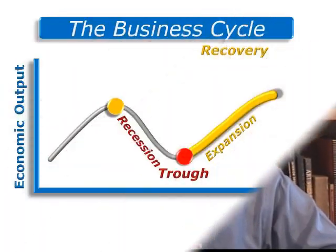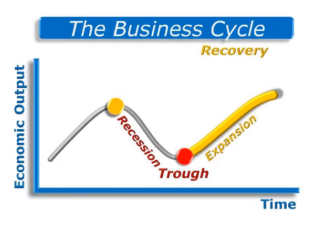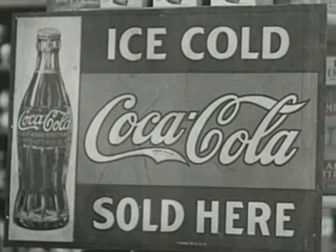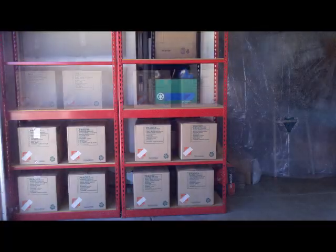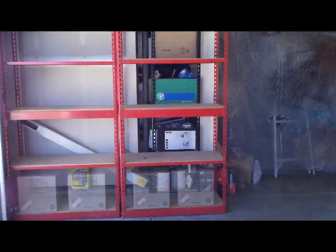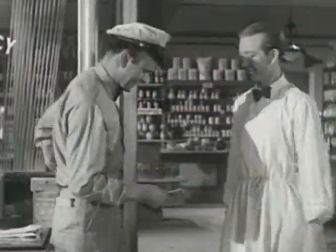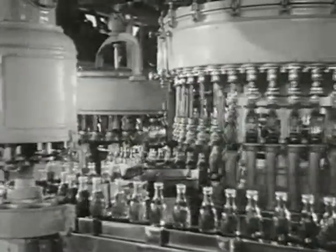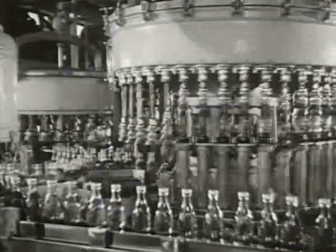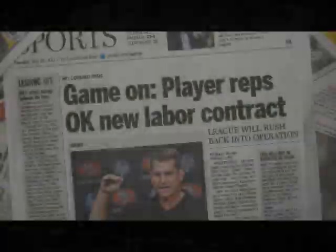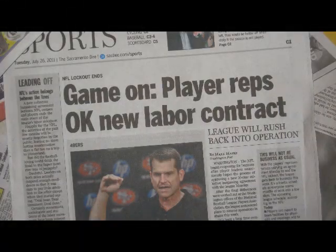Things start improving once we reach the trough and begin a recovery. Activity starts to grow again, sales improve, excess inventories are used up, new orders are placed, and production is ramped up again. Firms start looking for new employees and job opportunities improve. Eventually, more people find work and the unemployment rate comes down.